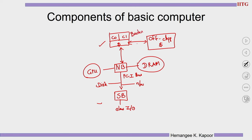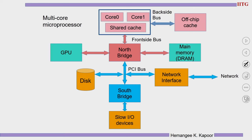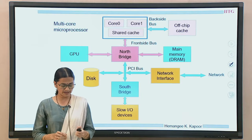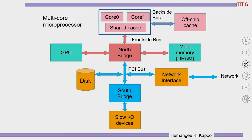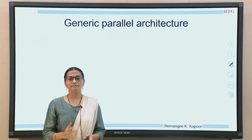So this is how a generic computer looks like: a microprocessor connected via the front side bus to the north bridge, which connects to the GPU and main memory, then the PCI bus connects to the disk and network interface, and the south bridge connects to slow IO devices. With this as one node — a single or multi-core computing node — we now need to connect multiple such nodes to create a parallel system.